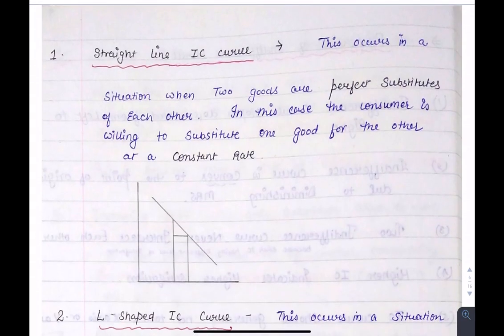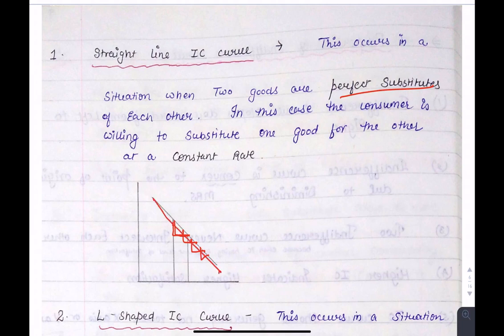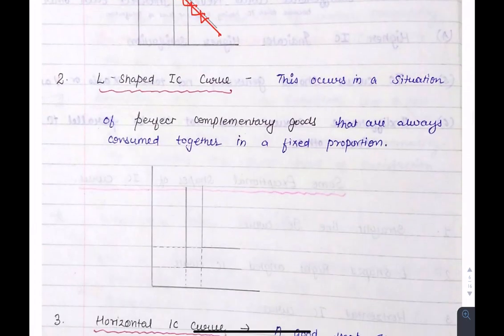A straight line IC occurs when goods are perfect substitutes, because here we are substituting one good for the other at a constant rate. So MRS will be equal everywhere, and if MRS is equal, our indifference curve will be a straight line.